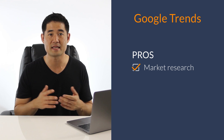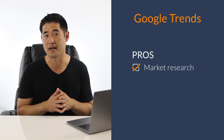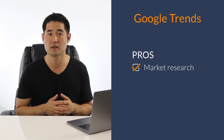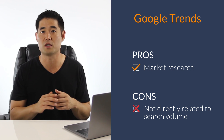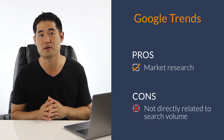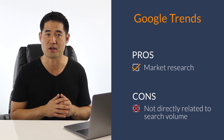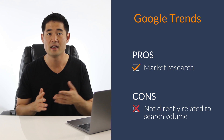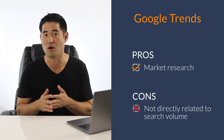A solid pro to Google Trends is that you can do market research on a niche, product, or topic and get an understanding if it's worth your time and effort to pursue. A con is that since Google Trends is based on popularity among all keywords and topics, you won't really know anything about search volume or how much organic traffic a term can generate for you. In my opinion, this tool is indispensable, so use trend data to get an understanding of whether your keywords and topics are worth targeting over the long haul.